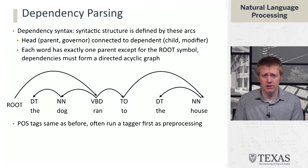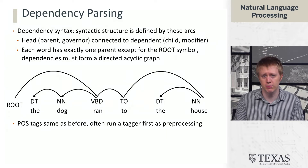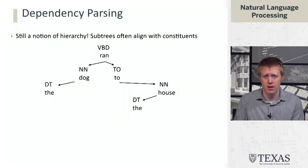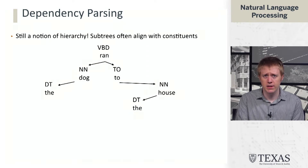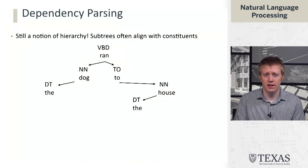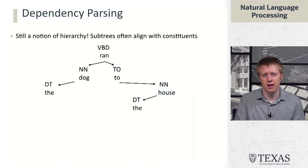It looks like we've thrown out the notion of hierarchy, but this actually isn't so different from constituency parsing. If we draw out the tree and look at the subtrees, we roughly recover the constituents we had before. For example, the subtree rooted at 'dog' contains 'the' and 'dog,' and 'dog' is a noun — so there's a phrase headed by a noun. We're not calling it a noun phrase in this case, but that's basically what it is.